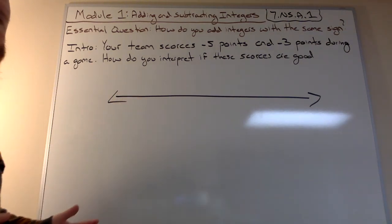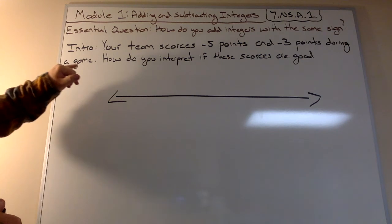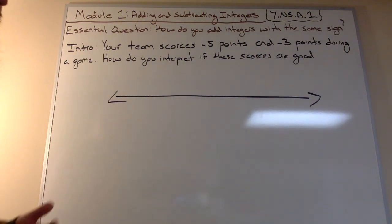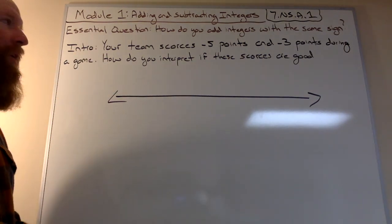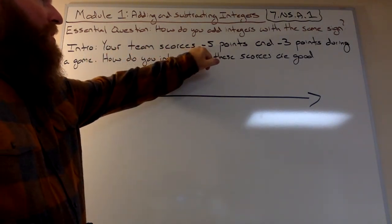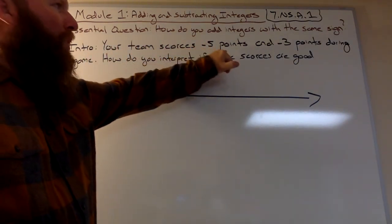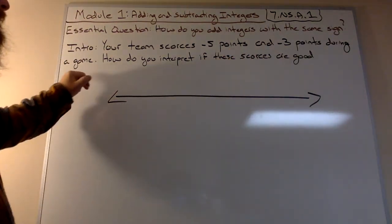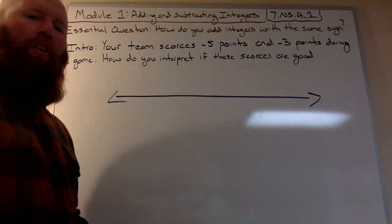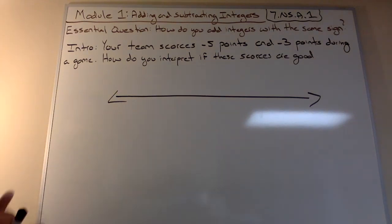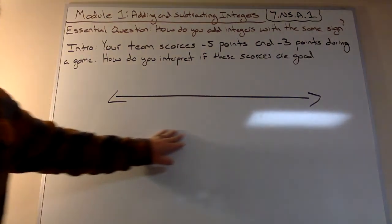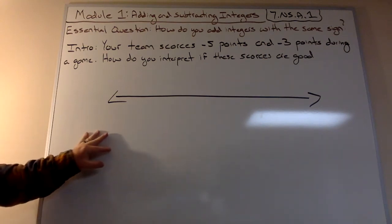What I want you guys to begin to think about is the intro. Suppose you're playing on a team — think about it, whether you like basketball, soccer, football, or baseball. Suppose your team scores negative five points and negative three points during a game. How do you interpret if these scores are good? You're thinking about integers, and you guys are going to get a template as well — we're going to call this the number line.